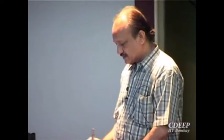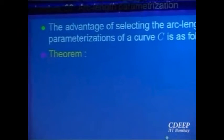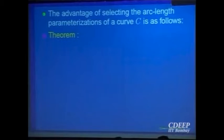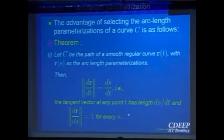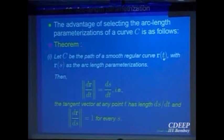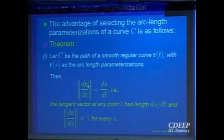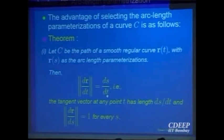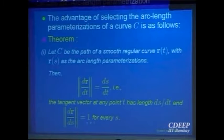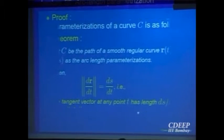Let us start the lecture. We have been looking at curves in space and gave what is called the arc length parameterization for a curve in space. Let us recall the advantage: if the curve is given arc length parameterization, then the rate of change is always unit. That is why it is called unit speed parameterization. For a curve R(t), if R(s) is arc length parameterization, then the norm of dr/dt equals ds/dt, which follows from the formula that s equals the integral from 0 to t of the norm of r′(u), and the arc length parameterization is always of unit length at every point.